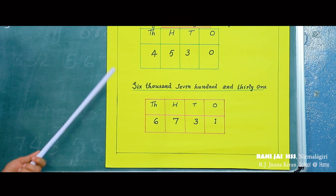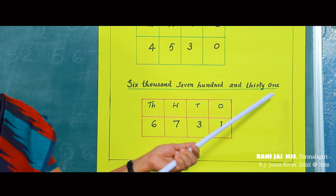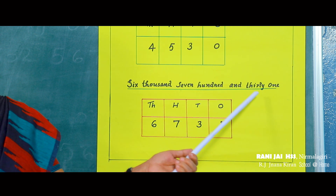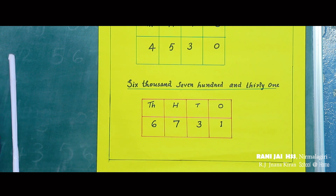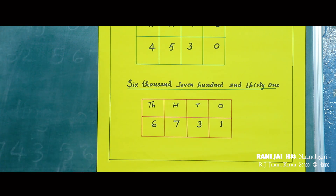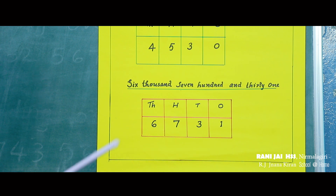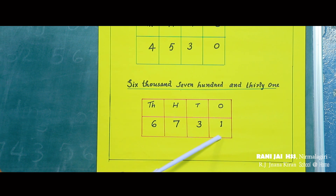Yes, we can read this: 6731. Here we have the thousands place, hundreds place, tens place, and ones place. How many thousands are there? Six — that is why I wrote 6 here. Now how many hundreds are there? Seven hundreds — that is why 7 here. And 31: tens place is 3, ones place is 1. Understood?